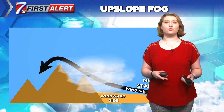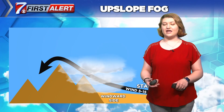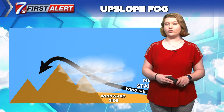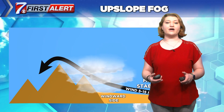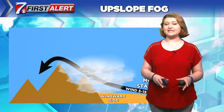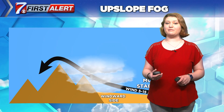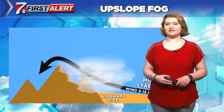Upslope fog can also form when air cools to saturation by expansion. Mixing increases the depth of the cooling, creating a deeper fog layer. Upslope fog is persistent, covers a wide area, can form under cloudy skies, and obscures hills and mountains. It will dissipate when surface winds cease or change direction, or when downslope winds develop.